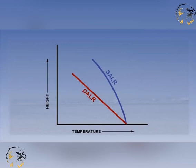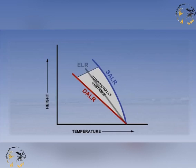The final scenario we must look at is in this part of the diagram. The ELR is said to be conditionally unstable if the lapse rate is less than the DALR but greater than the SALR.